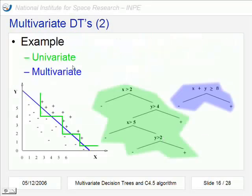A simple example to compare the univariate and multivariate approaches. Here we have a univariate approach that considers just one attribute per node, one, one, one, and results in these hyperplanes, as I had already said.